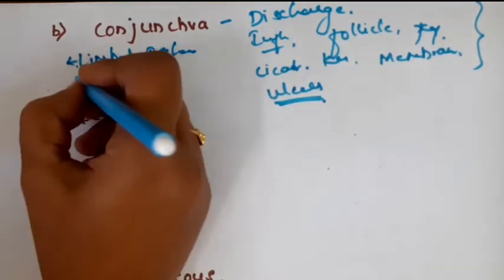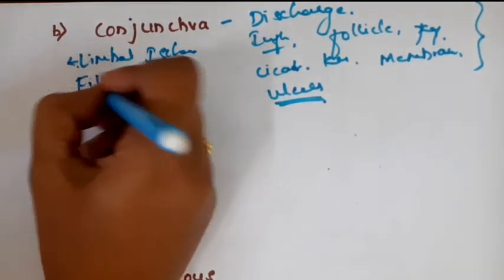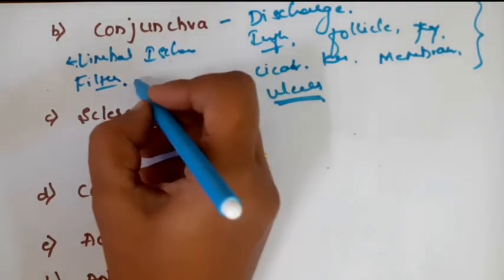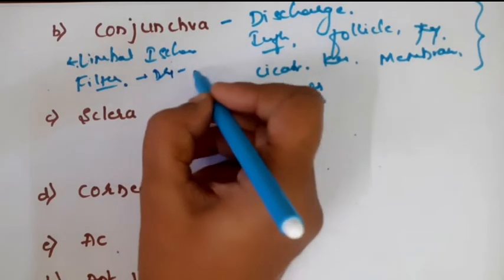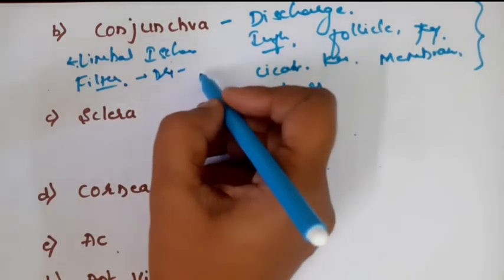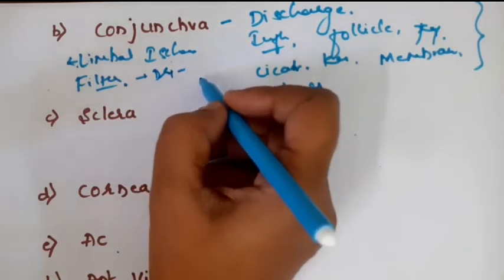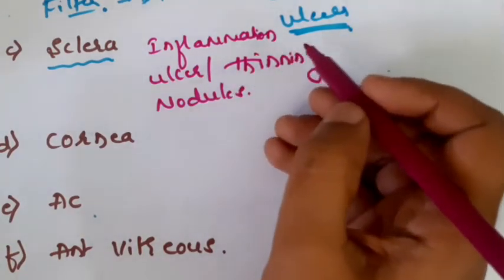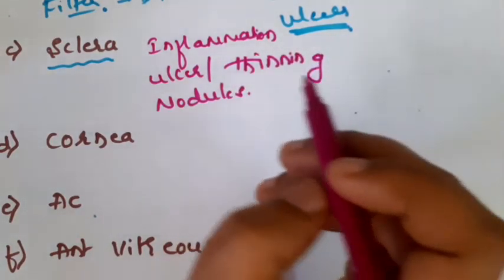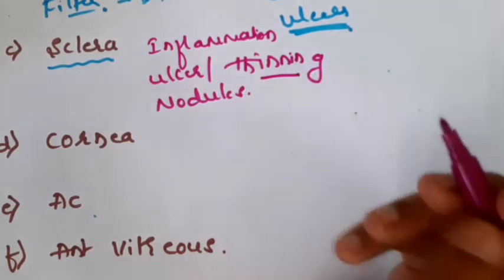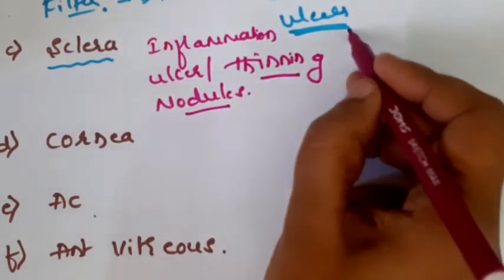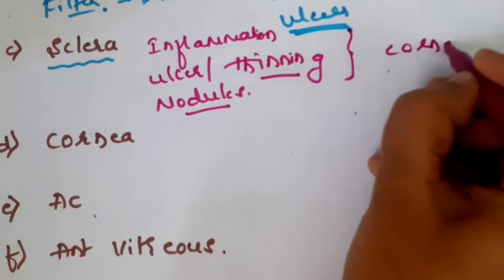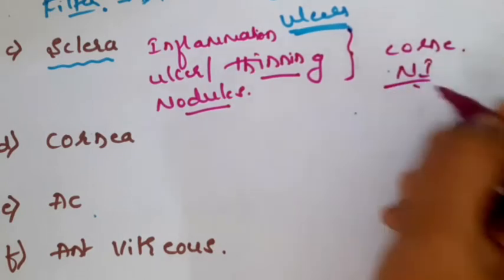Carefully look for a filtering bleb if there is an ulcer in the superior part of the cornea, which can be a reason for dry eye or facet formation leading to corneal ulcer. In the sclera, look for inflammation - scleritis, ulcer formation, thinning of the sclera, and nodules. All these may be associated with corneal ulcer, especially the non-infective types.